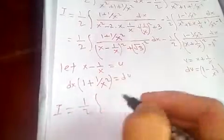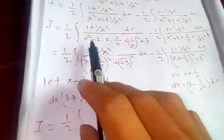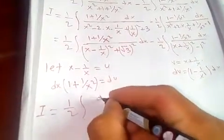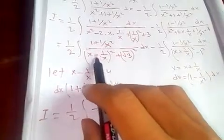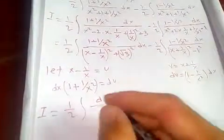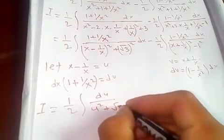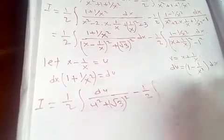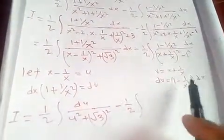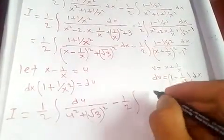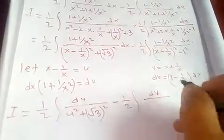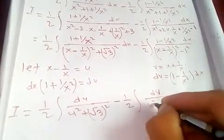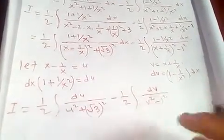Substituting, the first integral becomes: half times the integral of du over (u squared plus root 3 squared), and the second becomes: minus half times the integral of dv over (v squared minus 1 squared), where x minus 1/x is u and x plus 1/x is v.